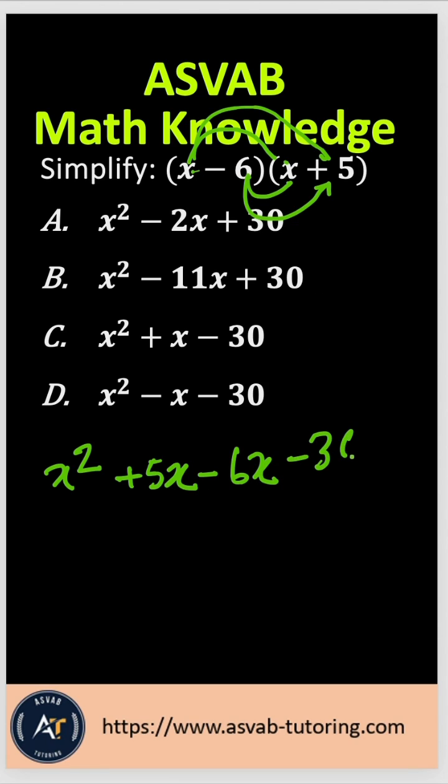Now, 6x and 5x are like terms you have to combine. If you have the same sign in front, you add. But here you have a different sign in front, which means you subtract the small number from the big number and keep the big number's sign.